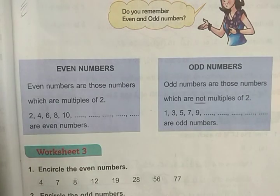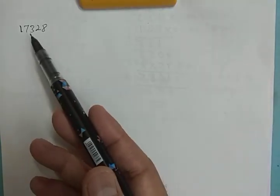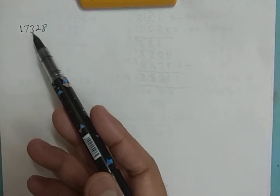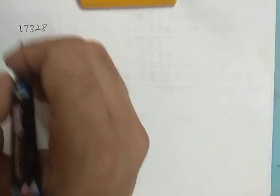I will tell you how to find even and odd numbers for large numbers. You know tables up to 10 or 15 or 20, but after that it gets difficult. Suppose I want to know whether 17328 is even or odd — it is very difficult to recite the table of 2 all the way to 17328. So how can we find out?